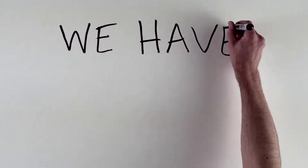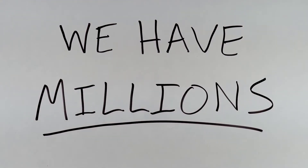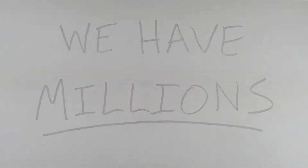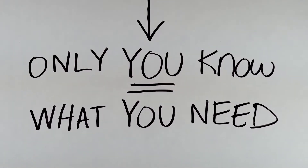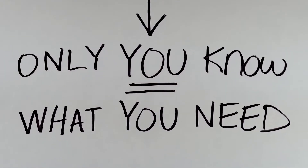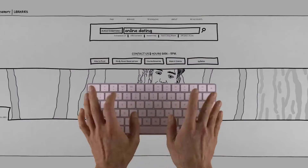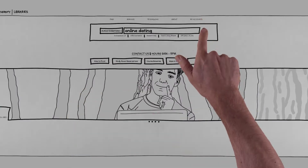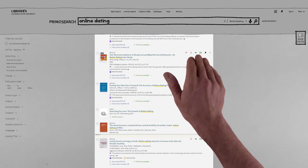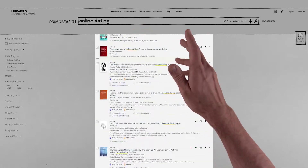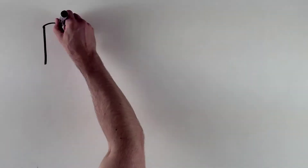Locating articles in CSU's library databases isn't a problem. Locating articles relevant to your topic, however, can be. A well-defined research question and good keywords will get you a long way, but at some point you just gotta slog through a list of results. That takes time, but if you use the right approach, it doesn't have to take ridiculous amounts of time.